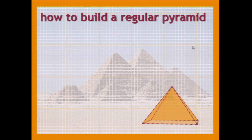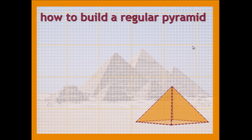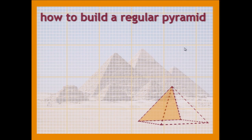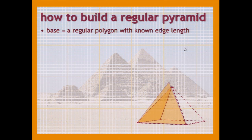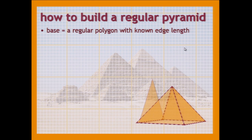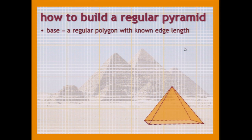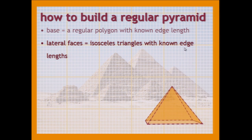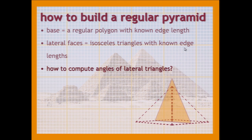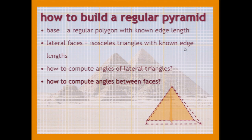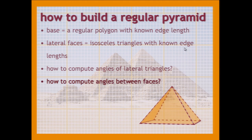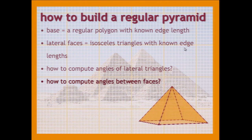So let's move on to 3D. Let's see how to build a regular opponent — a CSS one might be easier. So we start with a base, which is a regular polygon with known edge length — it may be a triangle, a square, or a regular pentagon. We also have some lateral faces which have at least two edges equal. So how do you compute the angles of the lateral triangle? And how do you compute the angles between the faces? Because the lateral faces are at an angle with respect to the base. Well, again, it all reduces to triangles.